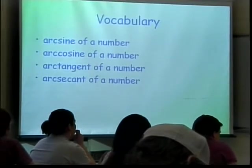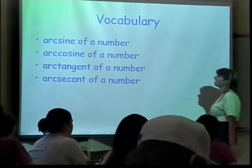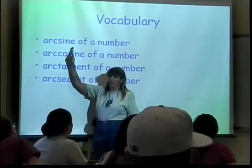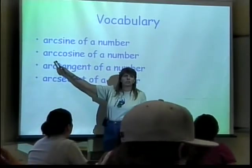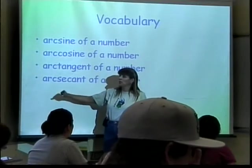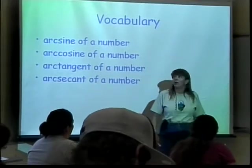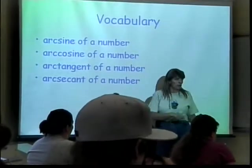The names of the inverse trig functions, the official names: the inverse sine function is called the arc sine, the inverse cosine function is called the arc cosine, the inverse tangent is the arc tangent, and the inverse secant is the arc secant. Notice we don't mention the others because for the most part we never touch them, and we're really only going to hit these three in this class.